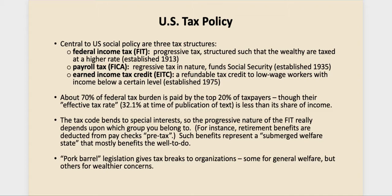The payroll tax — FICA — which funds Social Security, was established with the Social Security Act in 1935. That tax is regressive in nature, meaning a person making a small amount of money is taxed at the same rate as someone making much more. In fact, it's so regressive that at a certain level — something over $100,000 a year — an individual is no longer taxed for Social Security. One fix that would rescue the Social Security fund from its projected insolvency would be to raise that cap to a higher level, but that requires taxing wealthier people, and we haven't made much progress on that in the last 20 years.